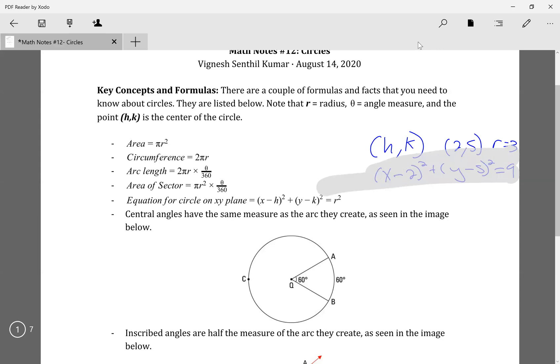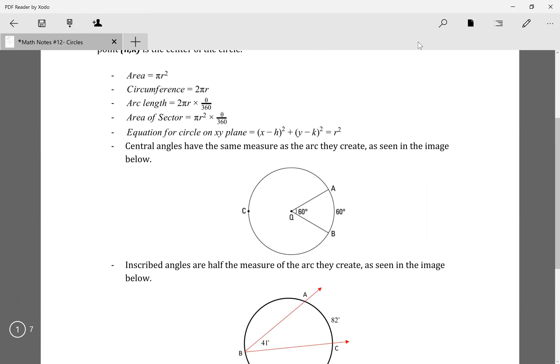So that's basically how you solve for the equation for a circle. And then there's something called central angles, which is just like this angle right here where it goes from the midpoint. And whatever this angle measure is, it's the same measure for this arc. So like this arc is 60 degrees.